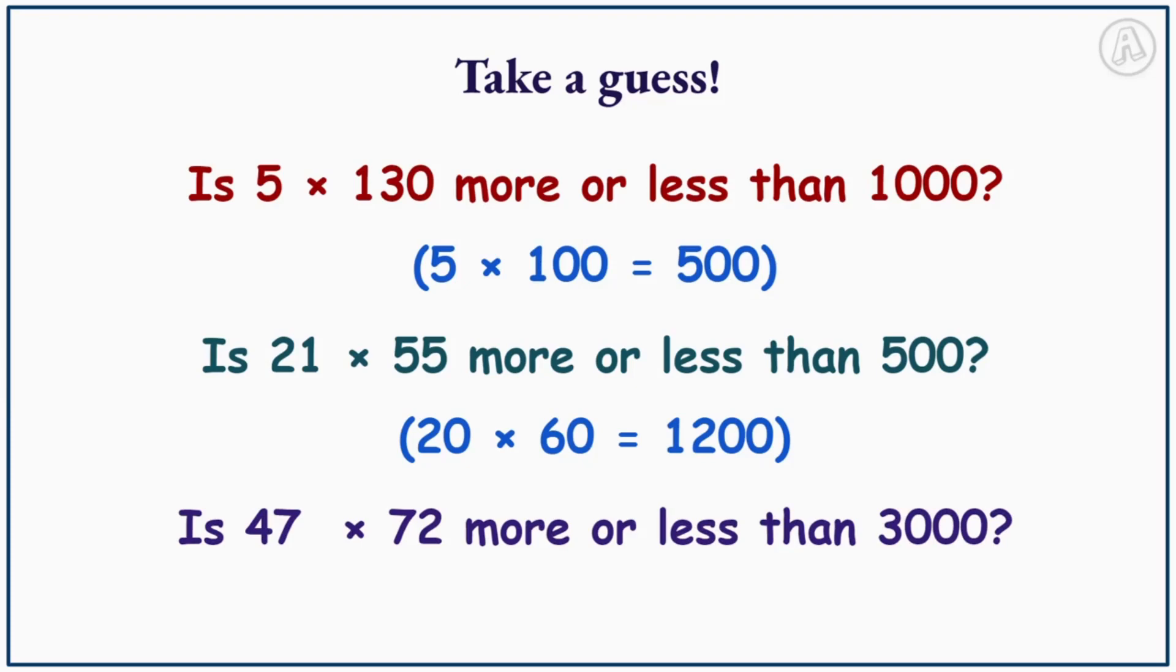Is 47 times 72 more or less than 3000? Let's round to the nearest tens. So 47 becomes 50 and 72 becomes 70. 50 times 70 equals 3500. So do you think 47 times 72 is more or less than 3000?